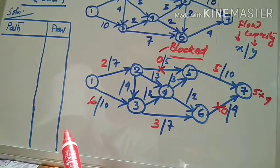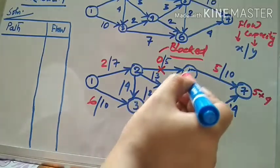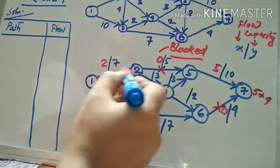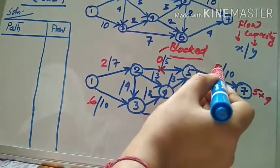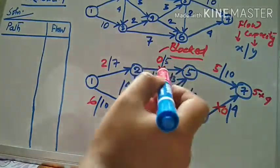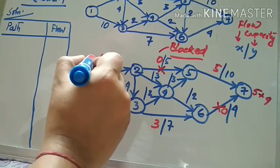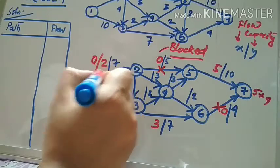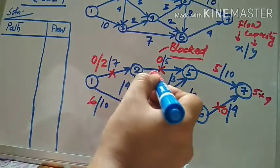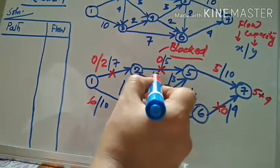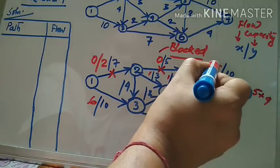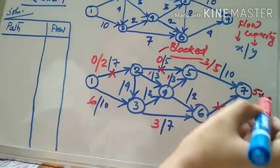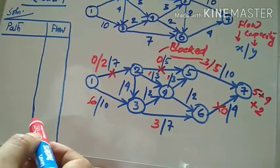Now let us select another path: 1, 2, 4, 5, 7. The weightages are 2, 3, 3, 5. The minimum is 2, so we subtract 2. Here it gives you 0, meaning this path is blocked. Then 3 minus 2 gives 1, 3 minus 2 gives 1, and 5 minus 2 gives 3. So we write the flow as 2 for this path.